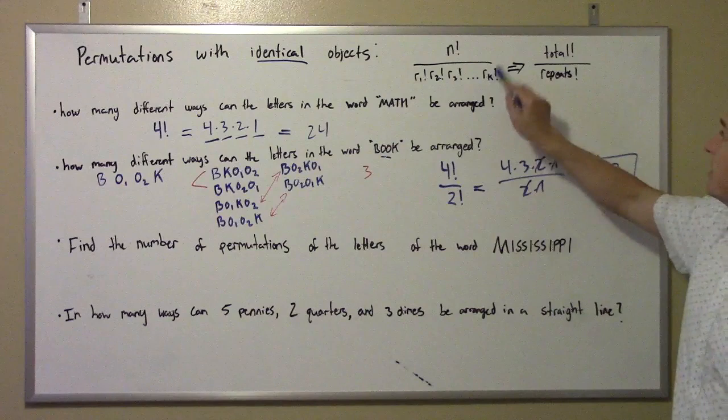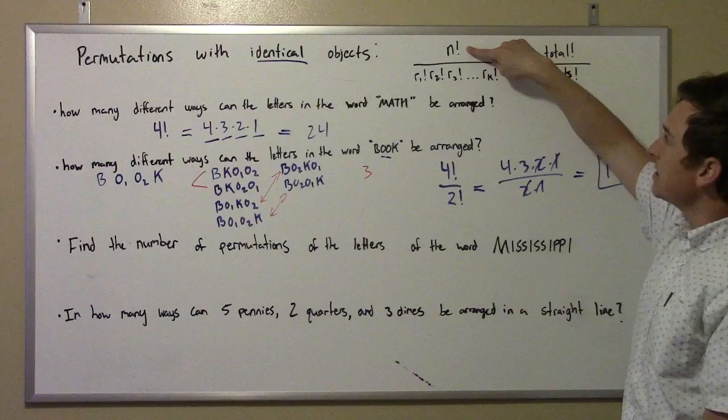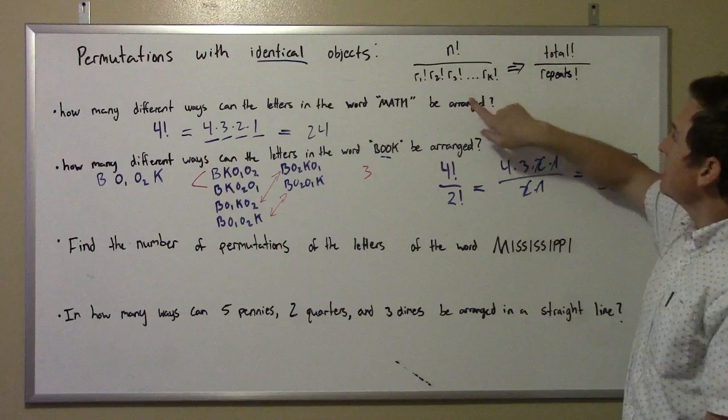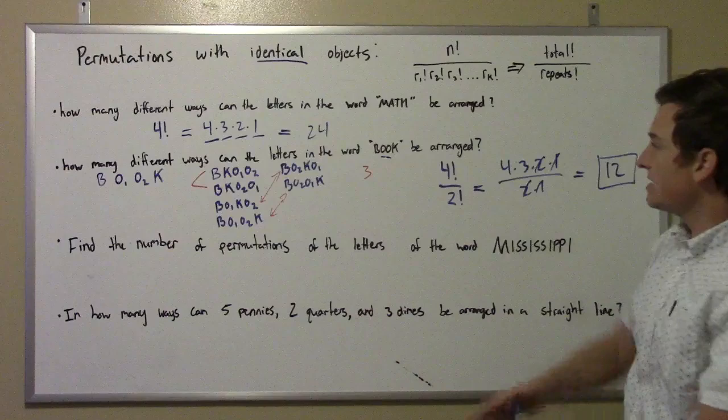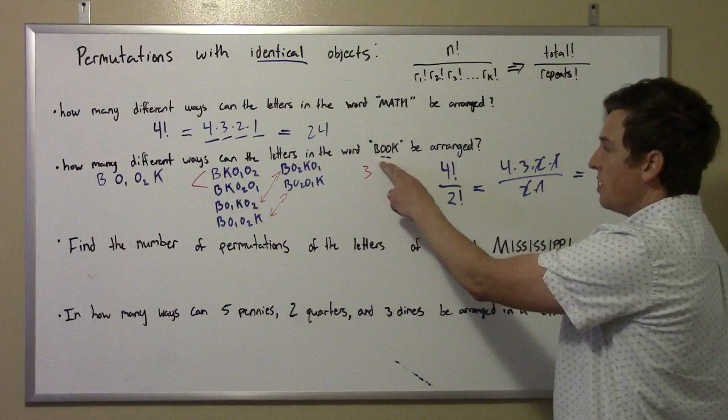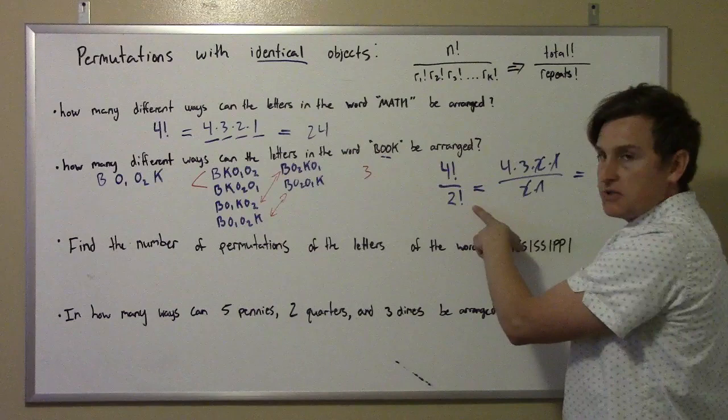The formula is: however many objects you have goes on top as n factorial. If I have four letters, that's four factorial. On the bottom, I have r1!, r2!, r3!, all the way up to rk! — those represent the different things that are repeated. In this case, I only have one repeat, the O's. There are two O's, so I put two factorial down here. Now if I had two K's, I'd have to put another two factorial. Or if I had three B's, I'd have to put a three factorial.